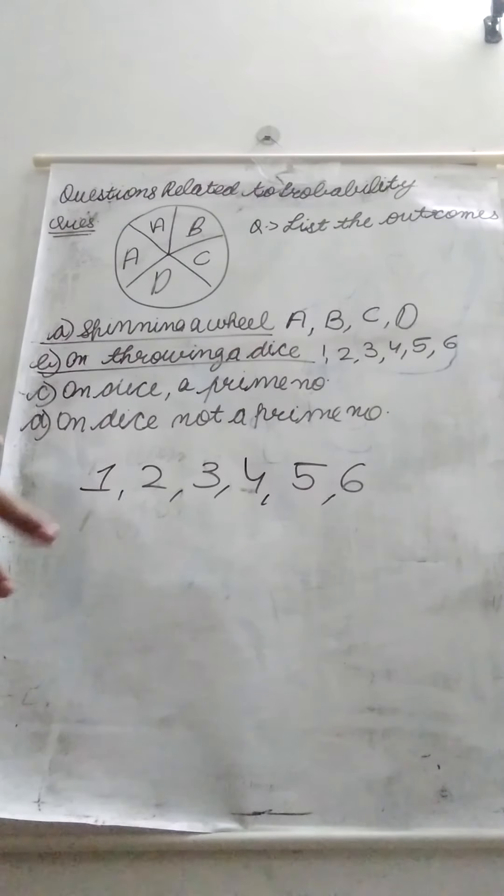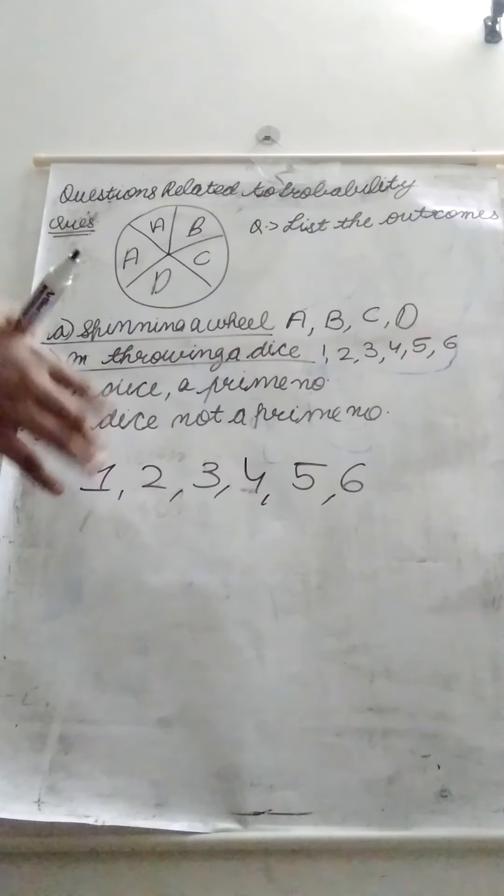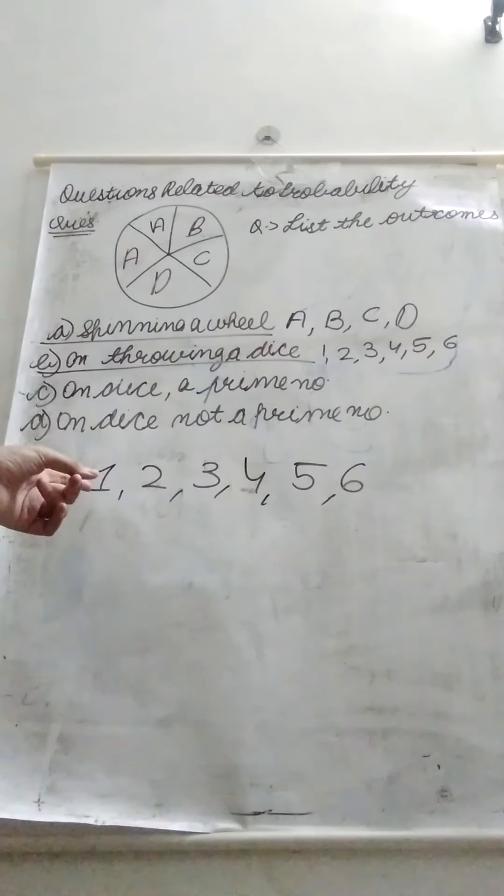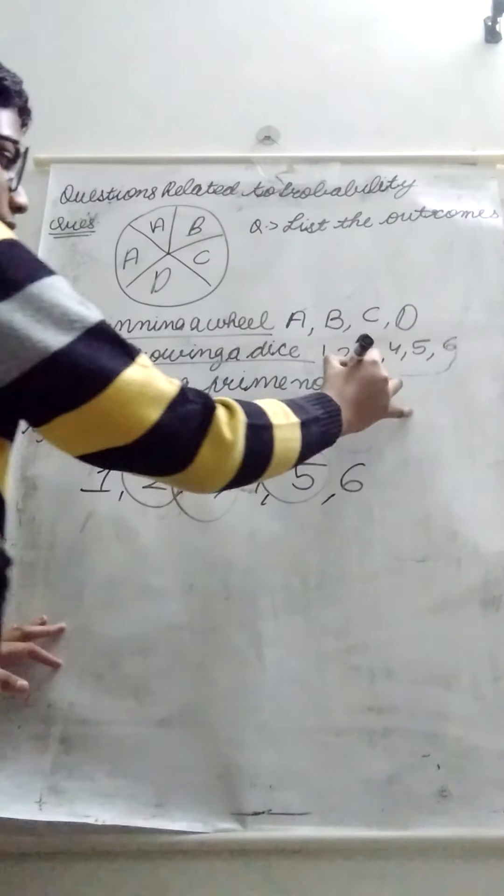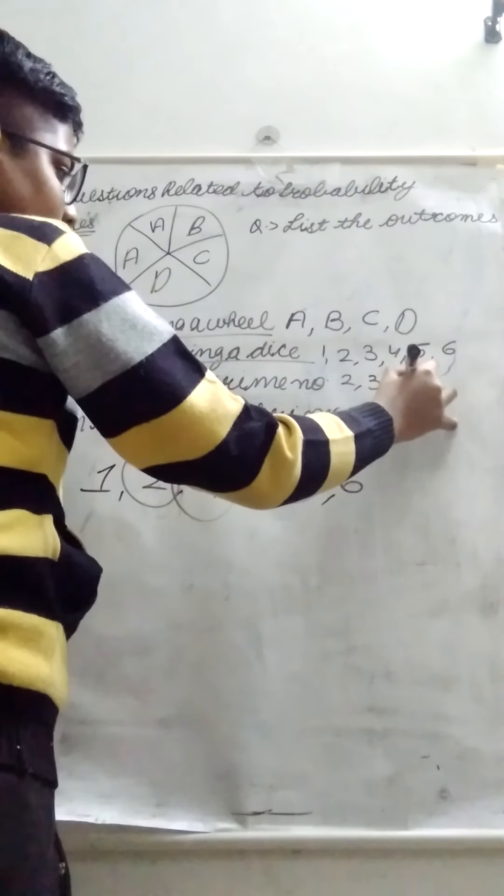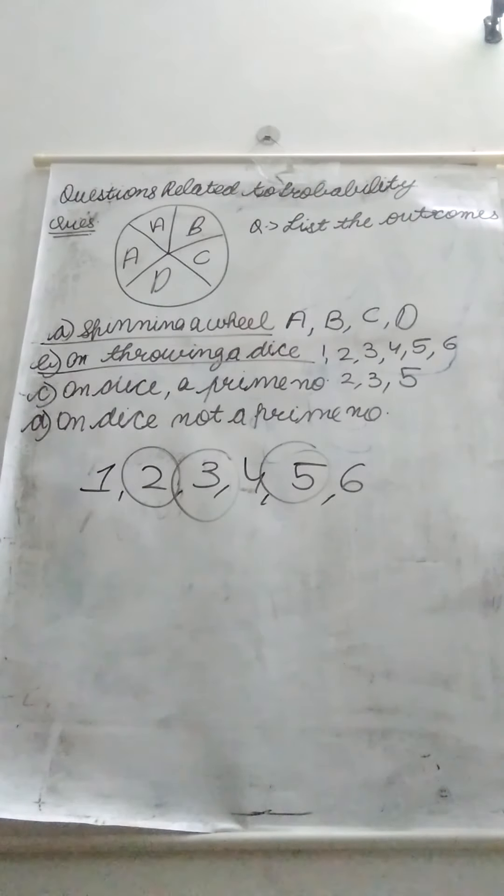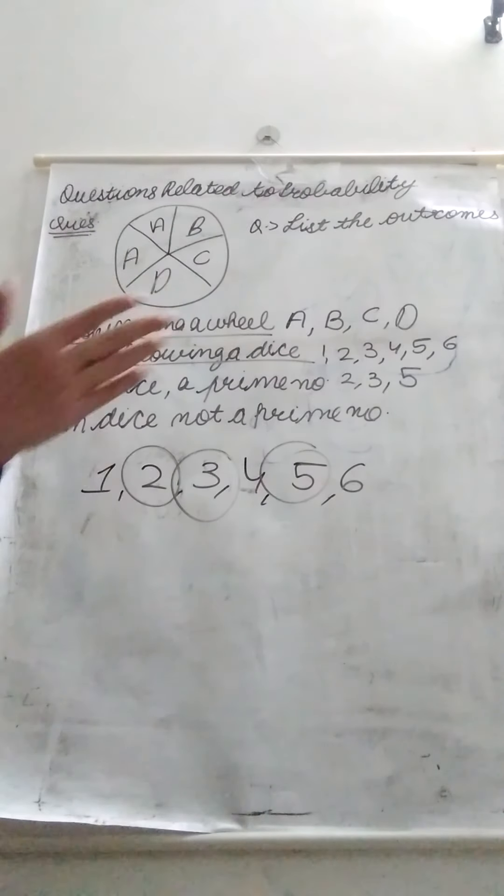One is not a prime number. So which ones are prime numbers? Two, three, and five are the prime numbers.